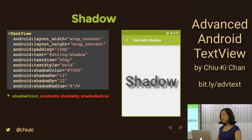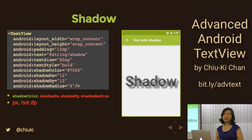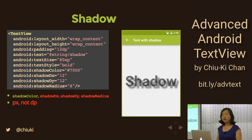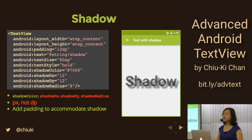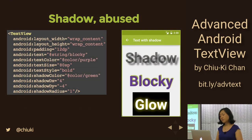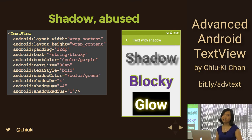One caveat: these parameters are specified in px, not dp, which was written a long time ago before people thought about screen density. You need to be careful because they'll look different depending on your screen density. Also, TextView is not smart enough to know that adding a shadow means it needs more space, so you need to manually add your own padding.